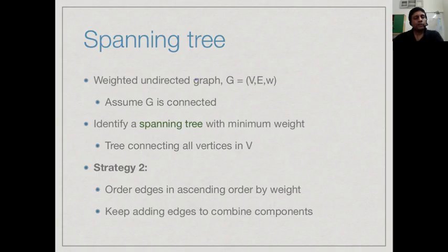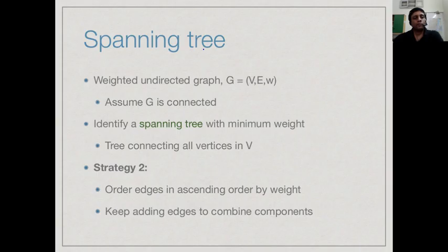Kruskal's algorithm keeps trying edges from smallest to largest, and for every edge, if it can add the edge without violating the tree property it adds it. In the process of adding the edge it does not actually construct a tree at every step — all it ensures is that it does not produce a cycle. If we keep adding edges so long as they do not produce cycles, at the end the claim is we get a minimum cost spanning tree.